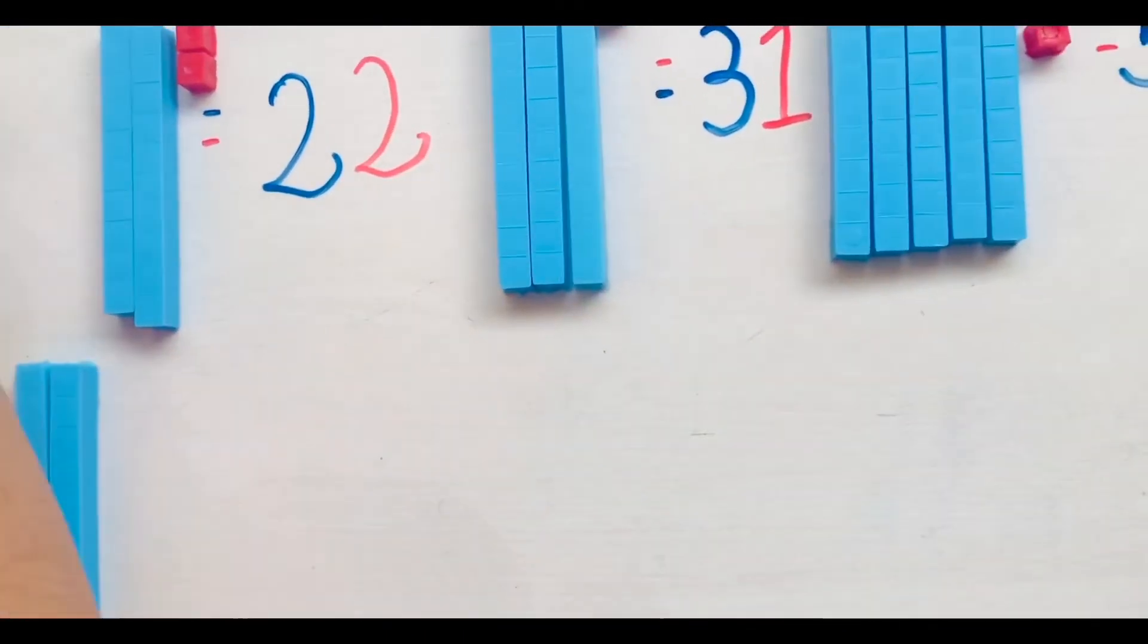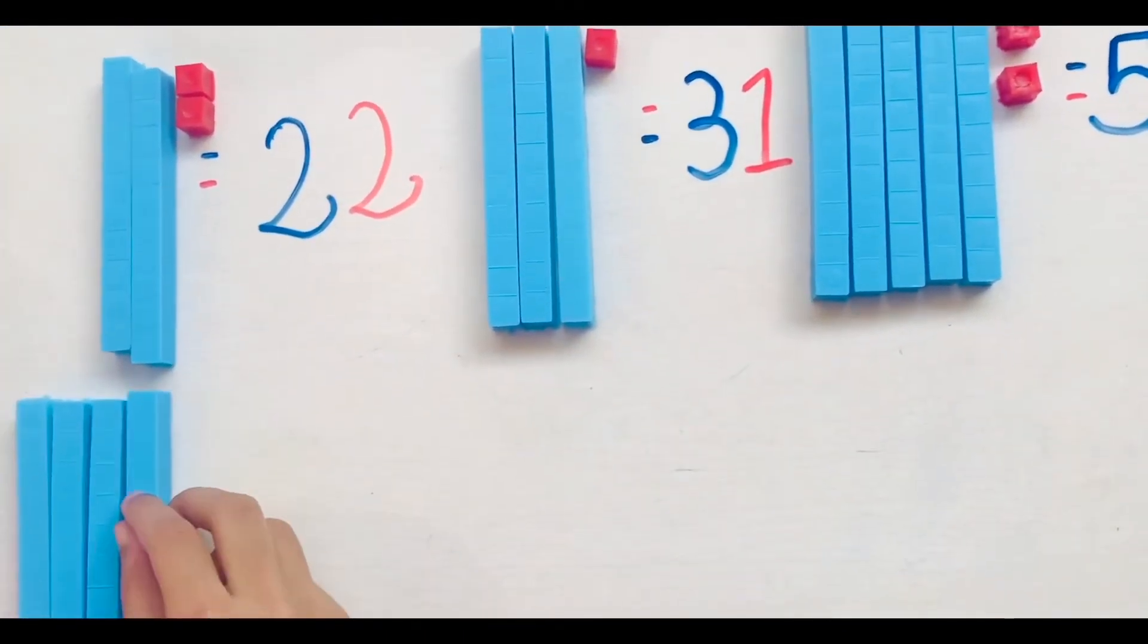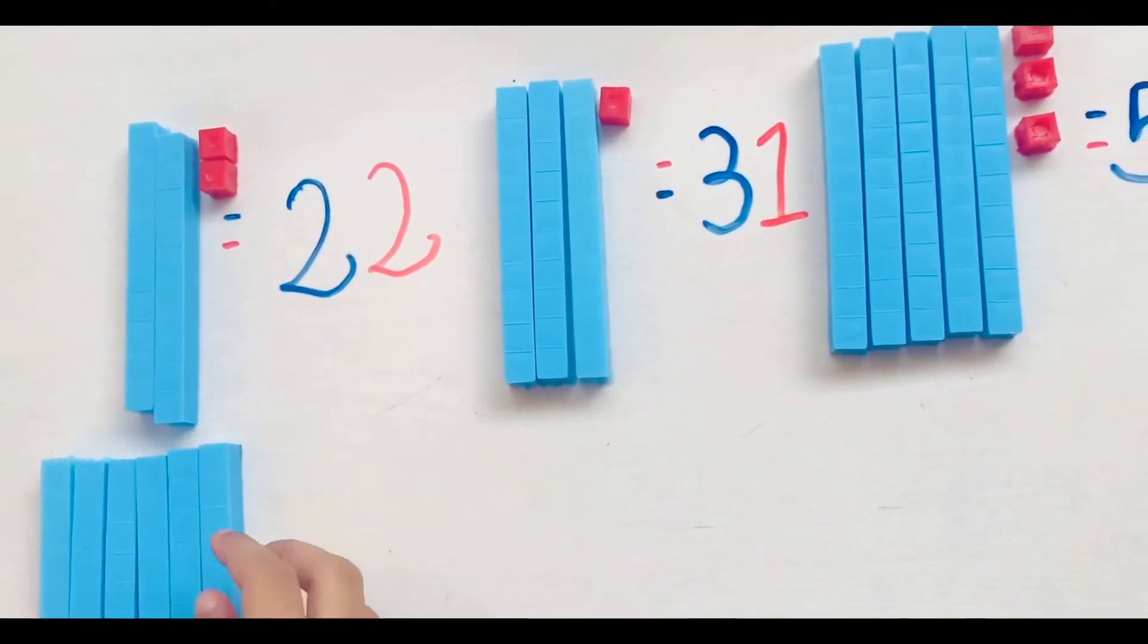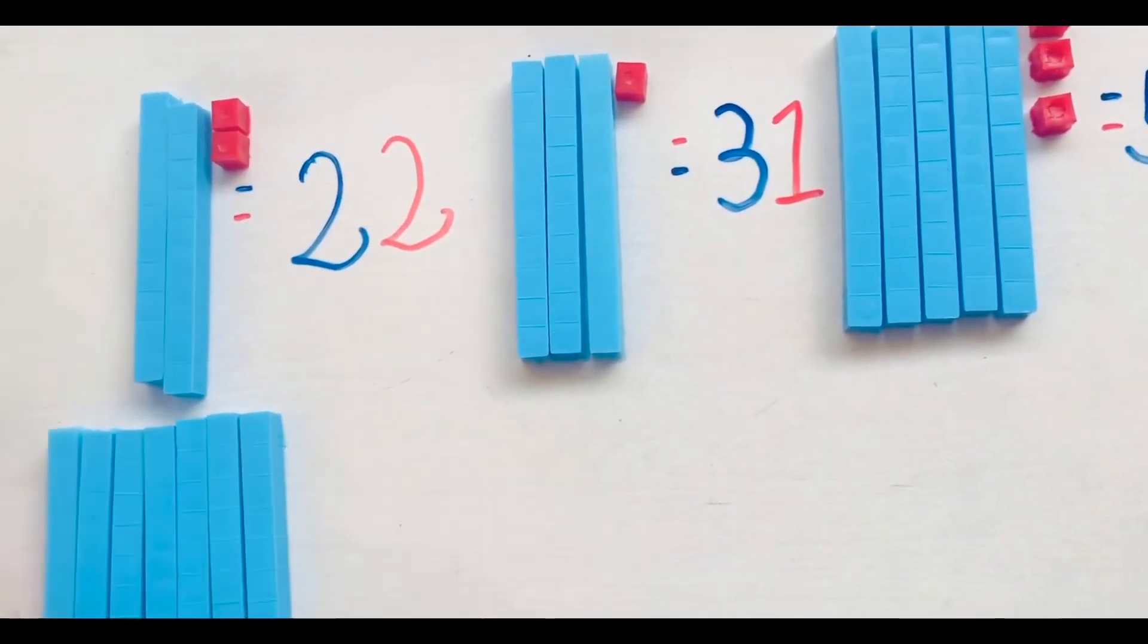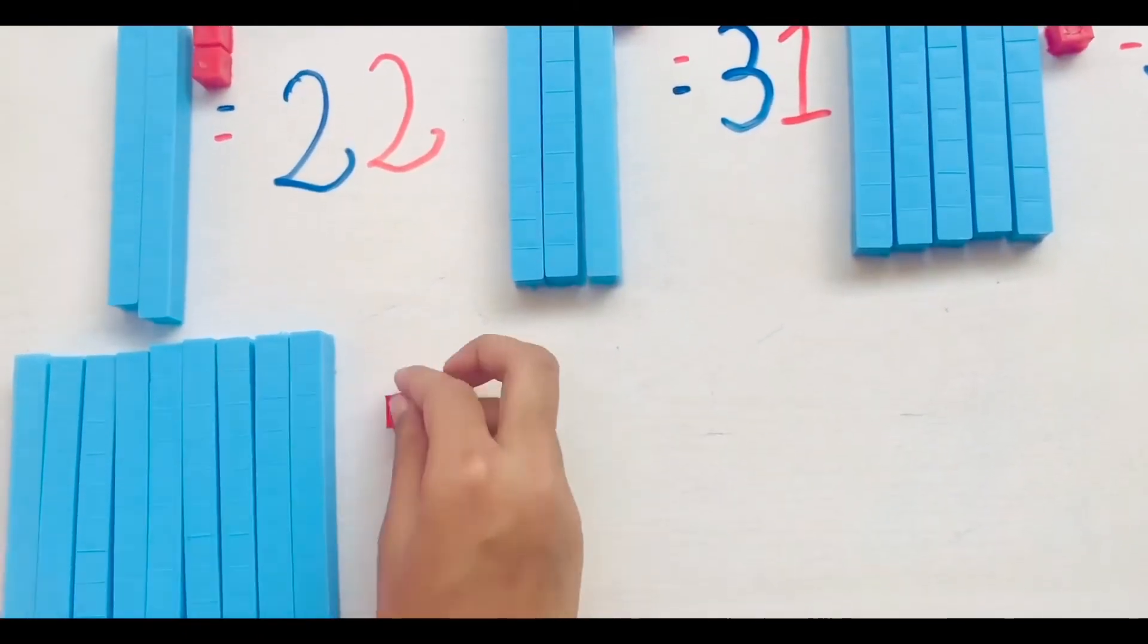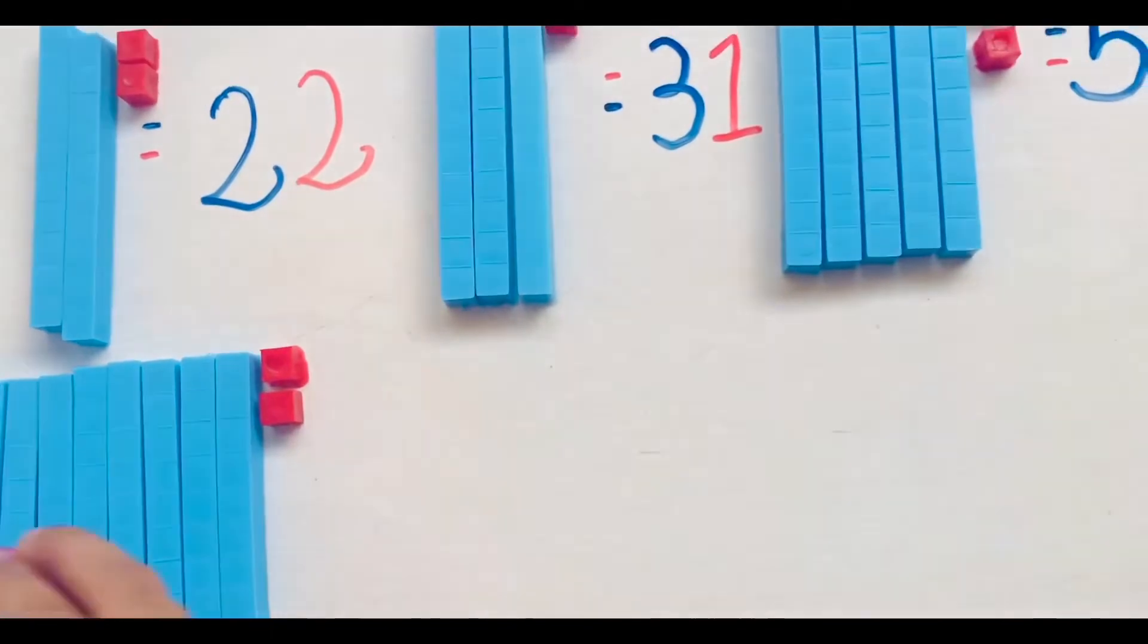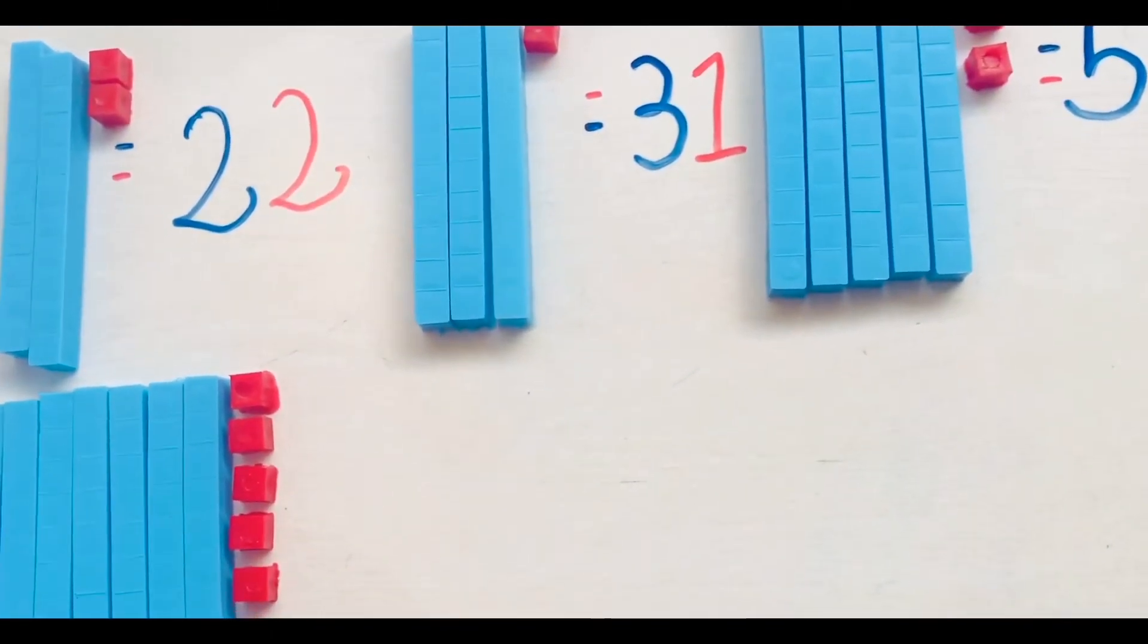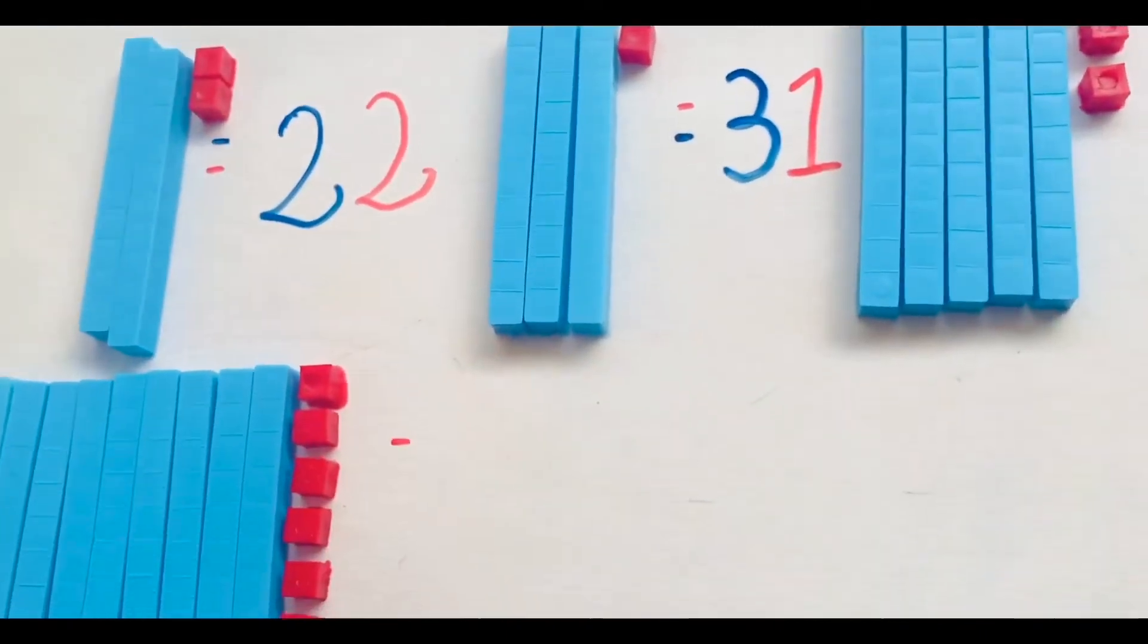The next number we are going to make is a big number that is 96. For that we need 9 ten bars and 6 units. Now we know how to make quantities using tens bars and units.